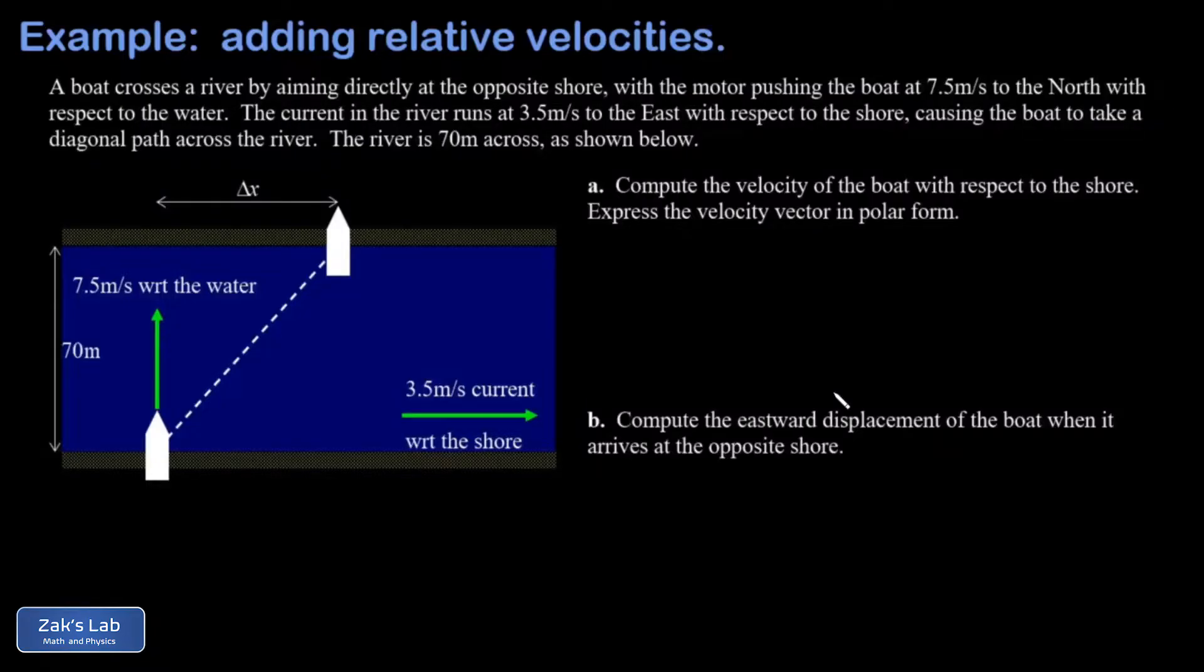In this video we're studying relative velocities and we start with a river that has a 3.5 meter per second current to the east, and then we have a boat that can move at 7.5 meters per second with respect to the water and it's pointed straight to the north.